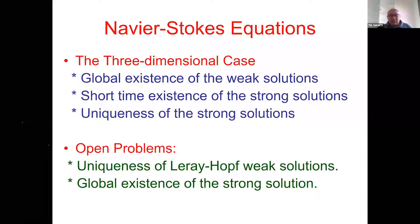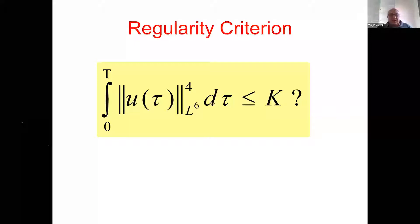There are many works concerning criteria for what could go wrong about existence and uniqueness. One classical regularity criterion: if the L^6 norm to the power of four is integrable in time on an interval, then the weak solution coincides with the strong solution and is unique up to time T — meaning there is no singularity of the strong solution up to that time.